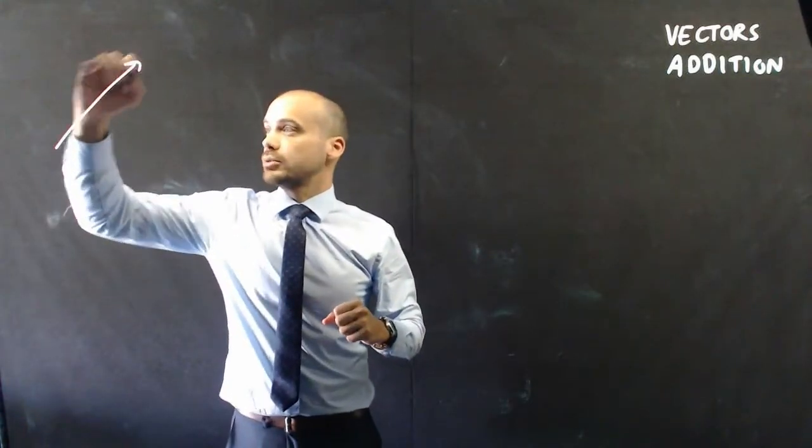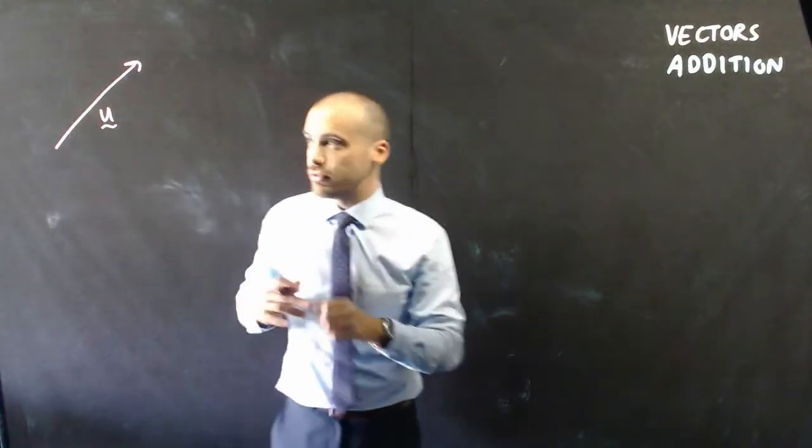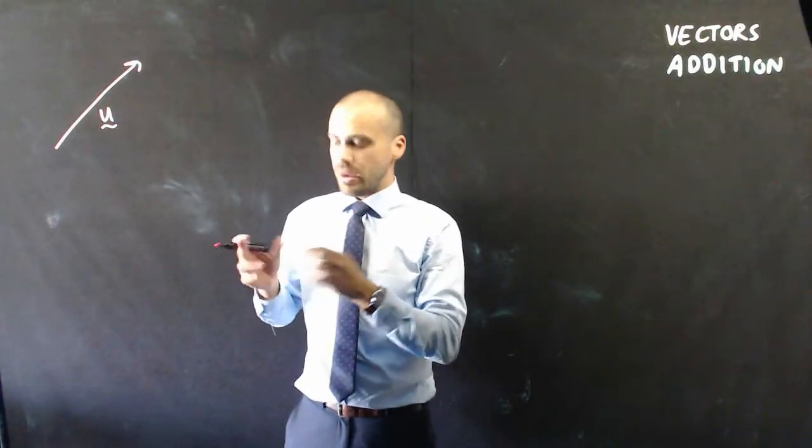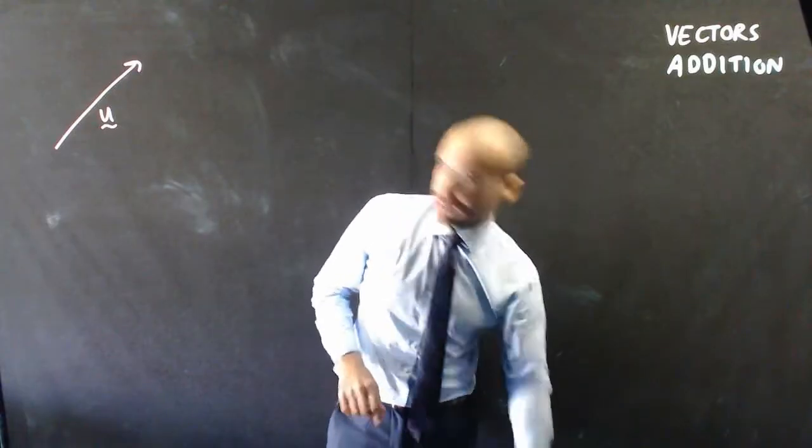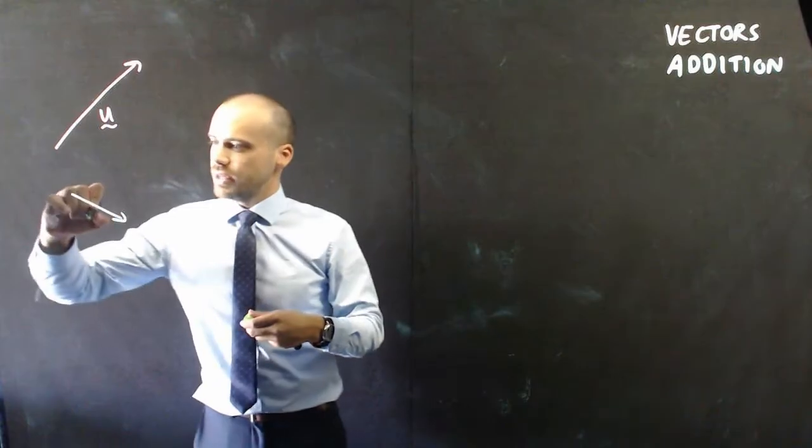Alright, well here's one vector, we'll call that vector u, like using u for vectors. And let's grab another vector, I might use a different color for the other vector. Let's call this one vector v.